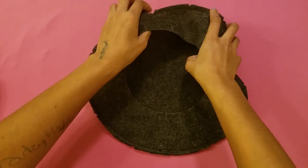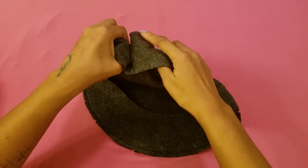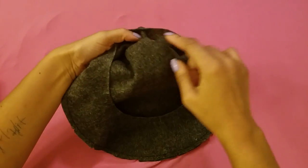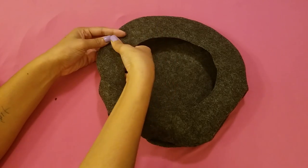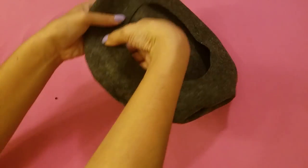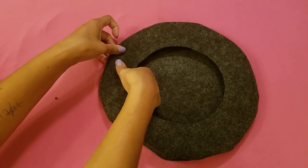Now gently flip your hat right side out. Again, you don't want to stretch out this circle, so be very gentle when you are doing it. I like to gently run my fingers around the edge just so everything lays out flat.